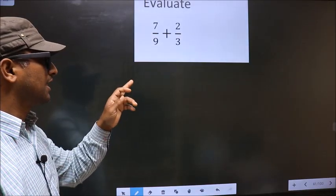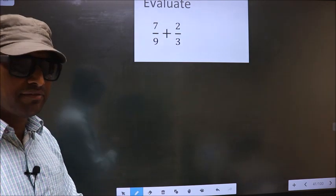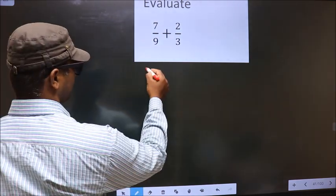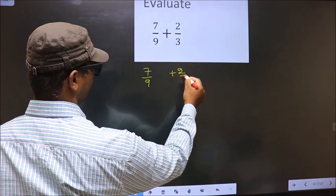Evaluate 7 by 9 plus 2 by 3. First given is 7 by 9 plus 2 by 3.